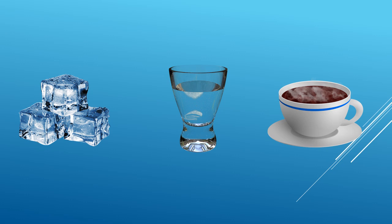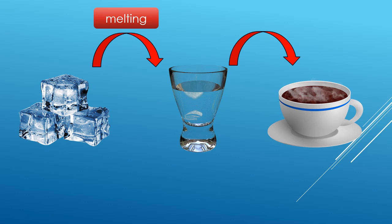Sometimes we can change the state of matter by changing the temperature. Ice is solid, but when it is warm, ice will melt into a liquid, water. When water is heated, some of the water will evaporate into steam, which is a gas.